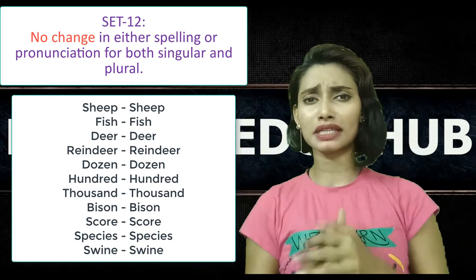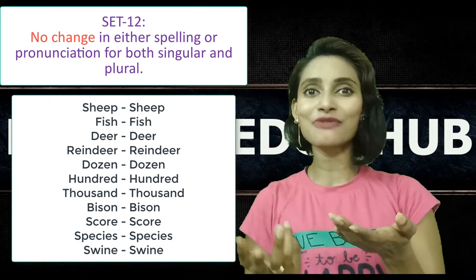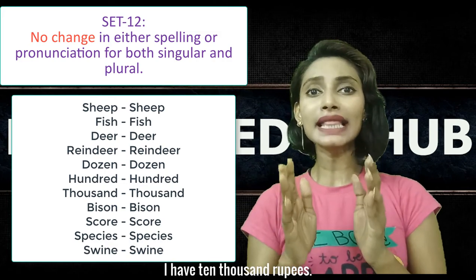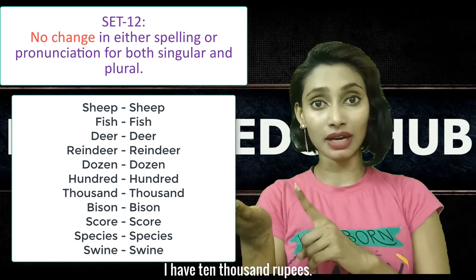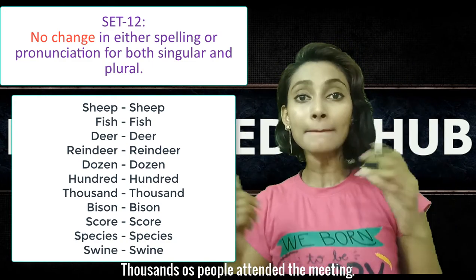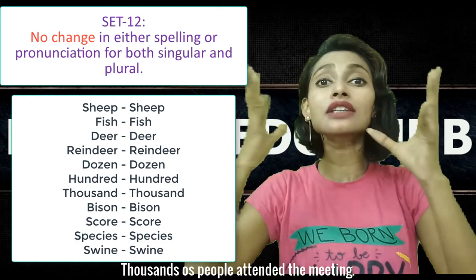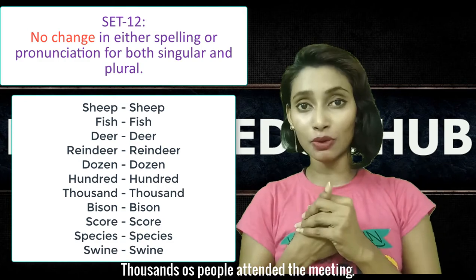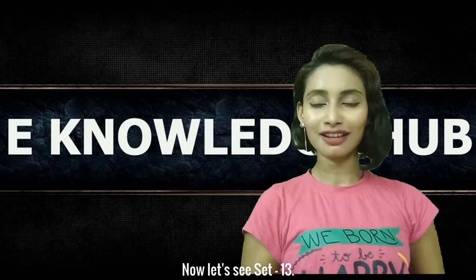However, there is an exception. Sometimes we can use these words in their abnormal plural forms — that is, with the addition of S. For example: 'I have ten thousand rupees' — here thousand has no plural. But I can also say 'thousands of people attended the meeting' — here there is no number preceding the word. We can use the plural, but it should be immediately followed by the preposition 'of' and the noun in plural.